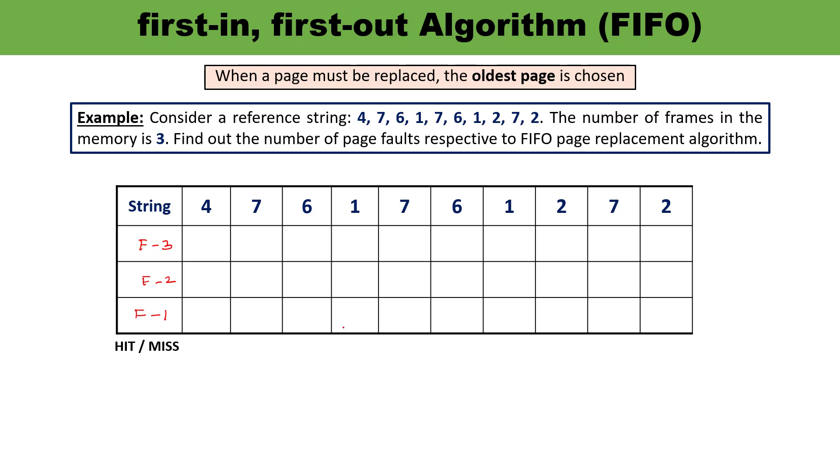Initially the entire frame is blank. What happens when first digit 4 arrives? 4 will occupy a position. All the things were empty, there was no data, it means this is the condition of miss. After 4, 7 will arrive. 4 is already occupied, this is free so 7 will occupy this position. This is also the condition of miss.